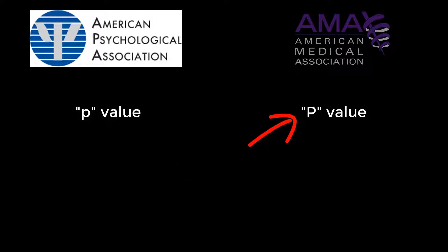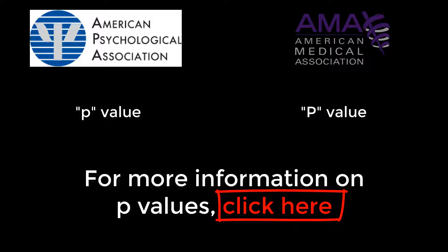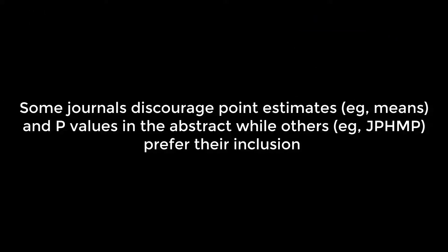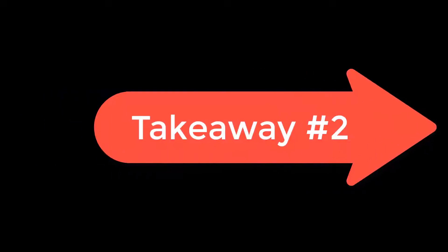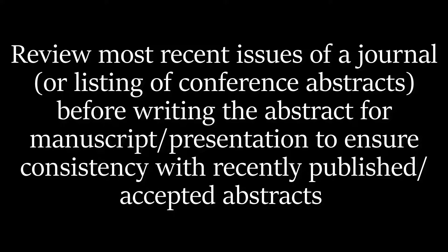AMA requires that p-values are expressed to two digits to the right of the decimal point, unless the p-value is less than .01, in which case it's expressed to three digits. To further complicate things, some journals discourage point estimates such as means and p-values in the abstract, while others, like JPHMP, prefer their inclusion. So takeaway point number two is to review the most recent issues of a journal or listing of conference abstracts before writing the abstract to ensure consistency with recently published and accepted abstracts.